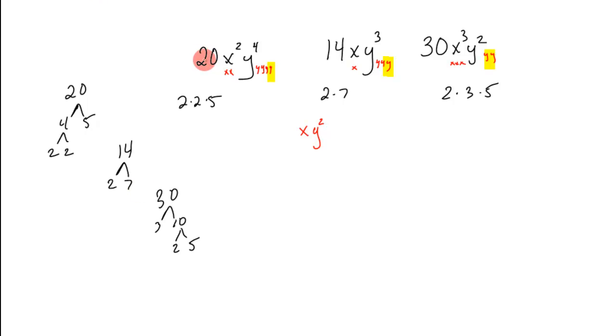I knew there was a two in the twenty. I knew there was a two in the fourteen. I knew there was a two in the thirty. But there aren't any threes in fourteen or twenty. And there aren't any fives in fourteen. So the greatest common factor there of the number is just a two. So that would be the GCF.